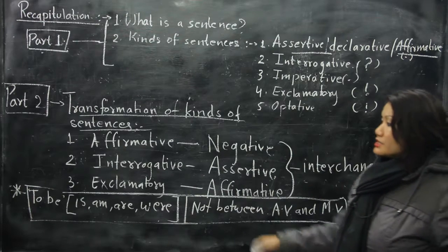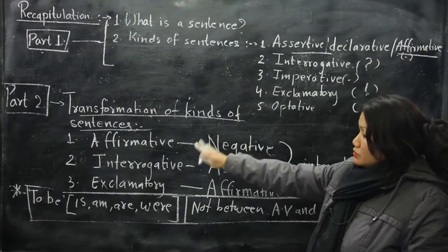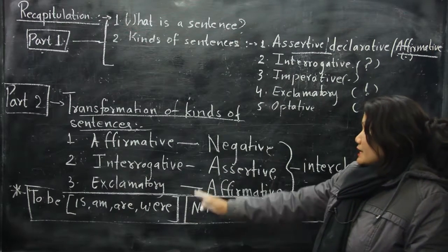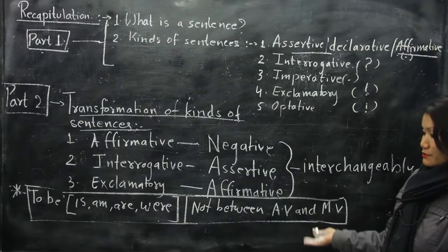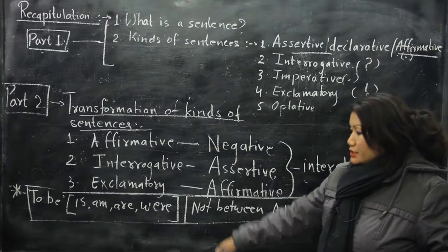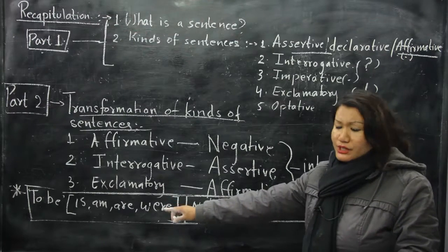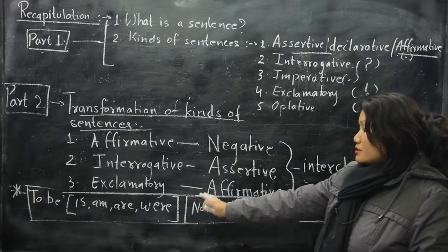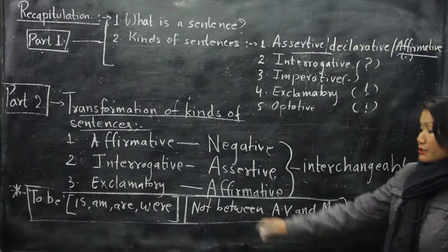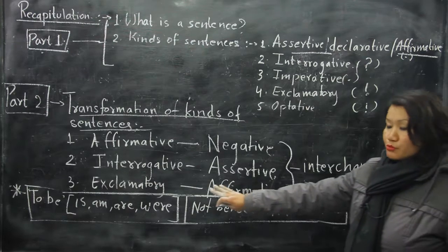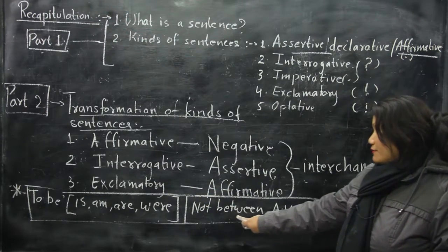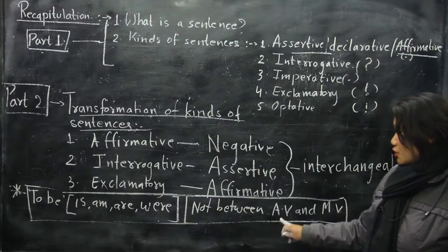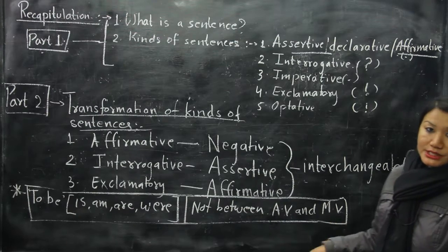In Part 2 we saw transformation of sentences: affirmative to negative, interrogative to assertive, and exclamatory to assertive — all interchangeably. When making a sentence negative using a 'to be' verb (is, am, are, was), 'not' is placed between the auxiliary verb and the main verb. In Part 1 we learned the kinds of sentences with definitions, and in Part 2 the transformation of those kinds.